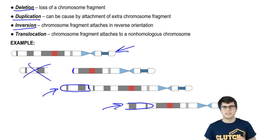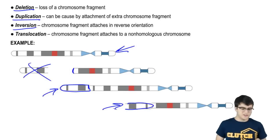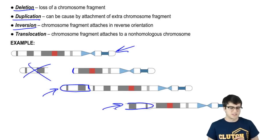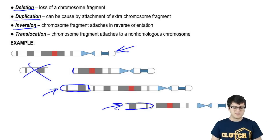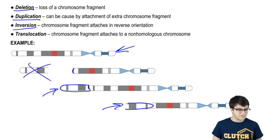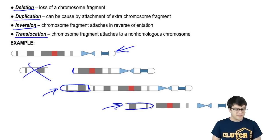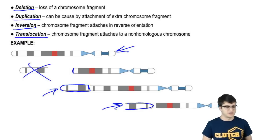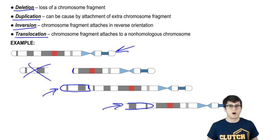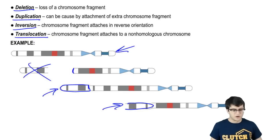Inversion is very dangerous, as genes need to be read in a specific direction. This is going to cause all the genes to be read backwards, and it's going to be very harmful to the organism. You can also have a translocation, where a chromosome fragment from one chromosome actually attaches to a non-homologous chromosome — it attaches to the wrong chromosome — and this also can be quite damaging.